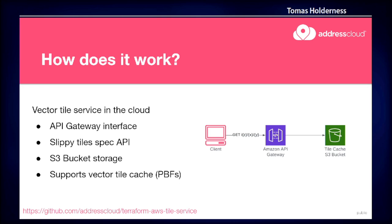This is hopefully the simplest architecture diagram you're going to see at FOSS4G. We've got Amazon API Gateway, which is essentially a slippy map tiles proxy that's proxying onto some tiles in a bucket. API Gateway is completely serverless, as is the back end. Your client passes in a request, API Gateway is there protecting your bucket, you can have a custom authentication mechanism, and it serves the tiles back to the user.